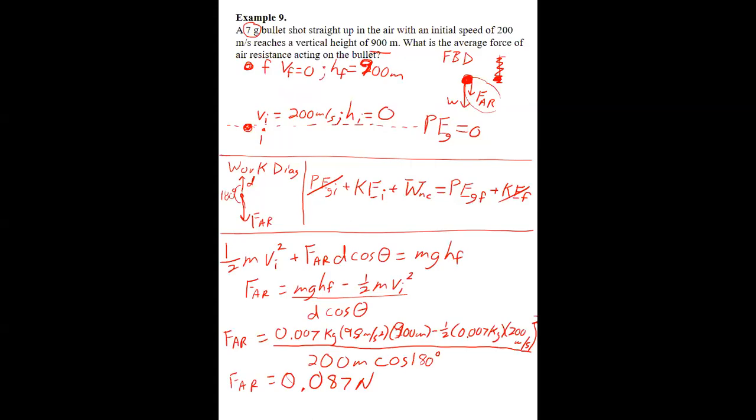Now we'll look at this problem for a bullet shot straight up into the air. And this one, there was air resistance acting on it. And the initial was right when it came out of the gun. And the final was when it was at the peak. We'll look at the energy bar chart for that.